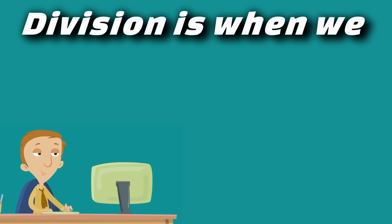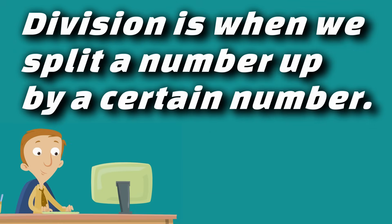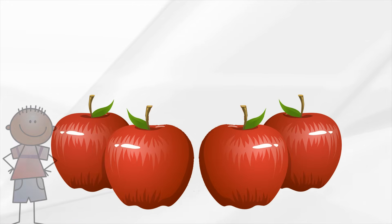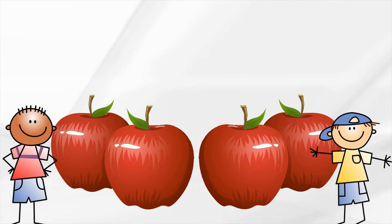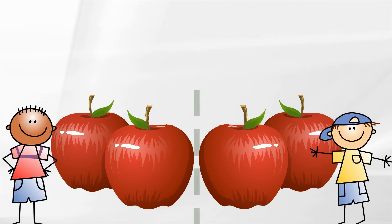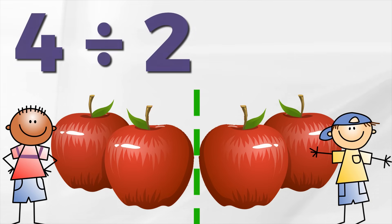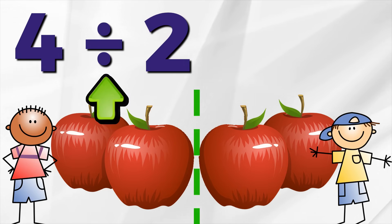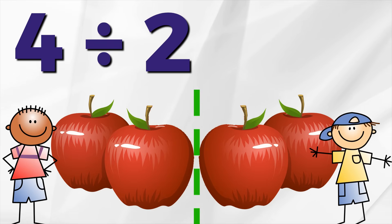Division is when we split a number up by a certain number. Let's say there are four apples. Michael and Liam want to split the apples, and they want to make sure it's fair. There are four apples, and we are dividing the apples into two groups — one for Michael, and one for Liam. Four divided by two. This symbol right here is the division sign.